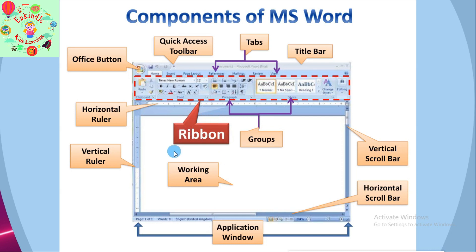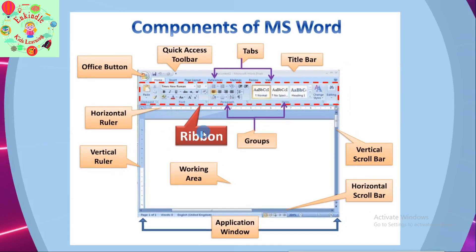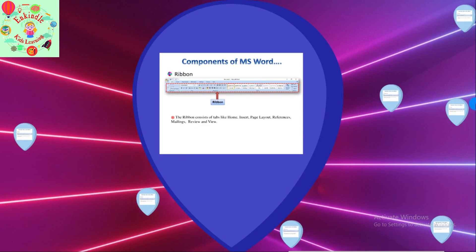Today we will be studying the component Ribbon in detail. The ribbon is a user interface element which was introduced by Microsoft in Microsoft Office 2007. It is located below the Quick Access Toolbar and the Title Bar. It comprises seven tabs: Home, Insert, Page Layout, References, Mailing, Review, and View.